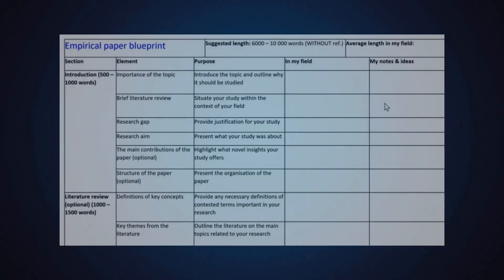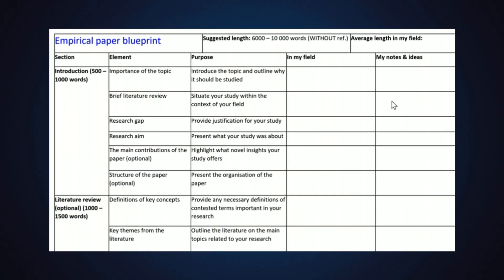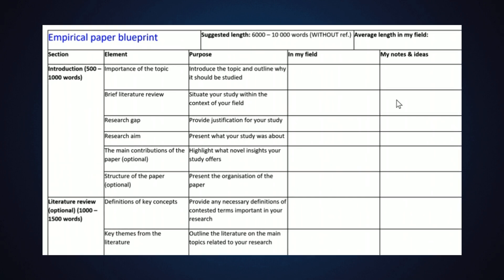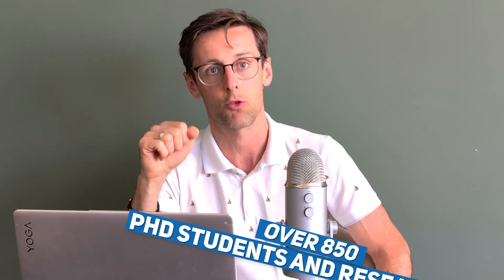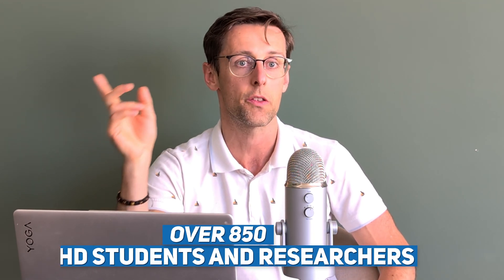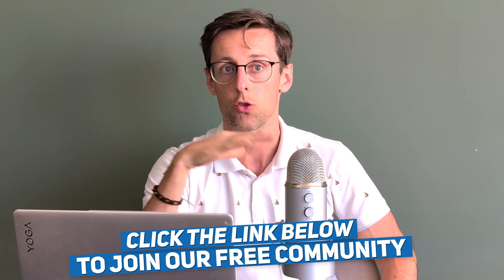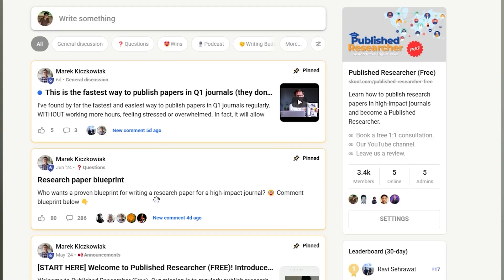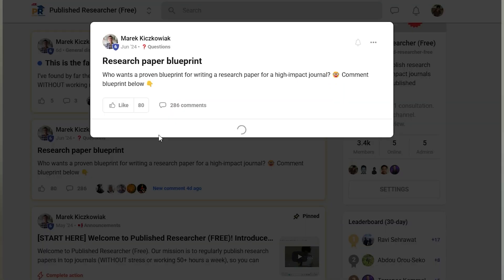Once you've done it, develop a blueprint with all the elements that need to be included — the purpose and the length. This will make writing your paper so much easier and give you confidence because you're organizing your paper in a proven way that gets you published in Q1 journals. If you want to save time, you can click the link in the description to go to our free community, where this blueprint — developed after working with over 850 PhD students and researchers — is pinned right at the top.